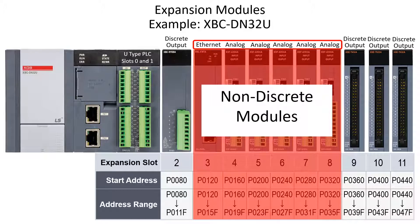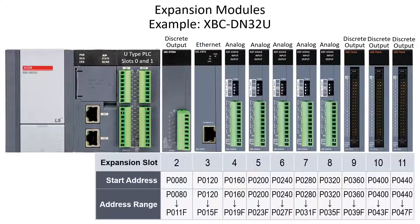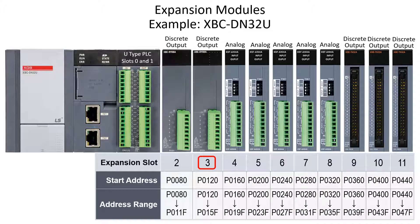Slots 3 through 8 are communication and analog modules. Although non-discrete modules, they are each allocated 64 bits of P data in the configuration. If the Ethernet module in slot 3 is replaced with a discrete output module, the P address range remains the same. The first discrete output in slot 3 will begin with the starting address of P 12 bit 0.